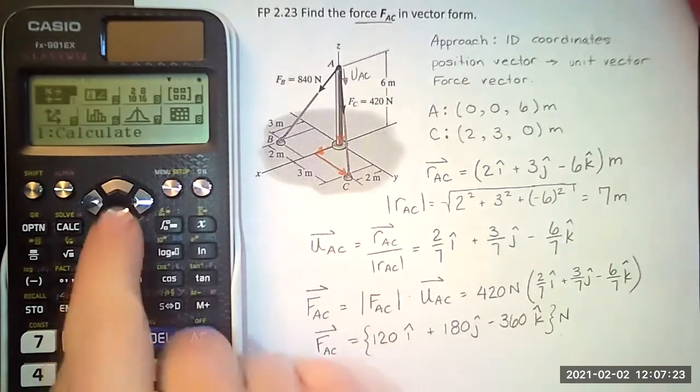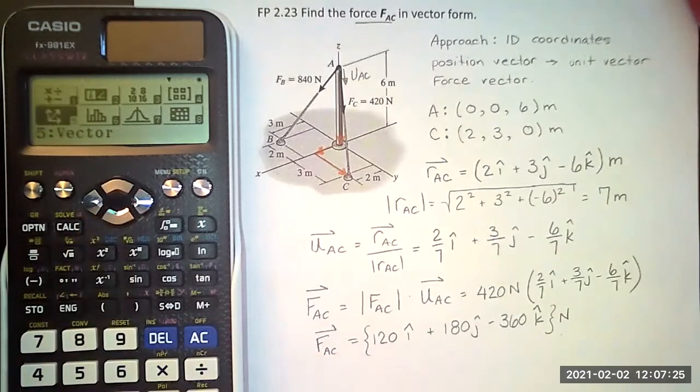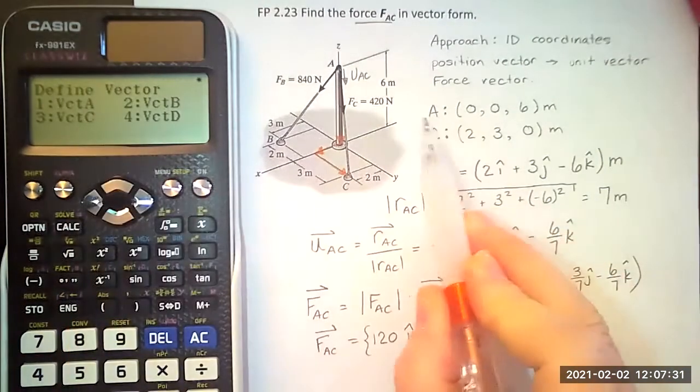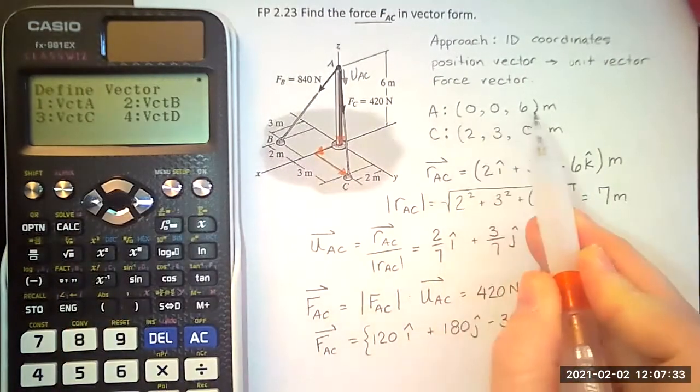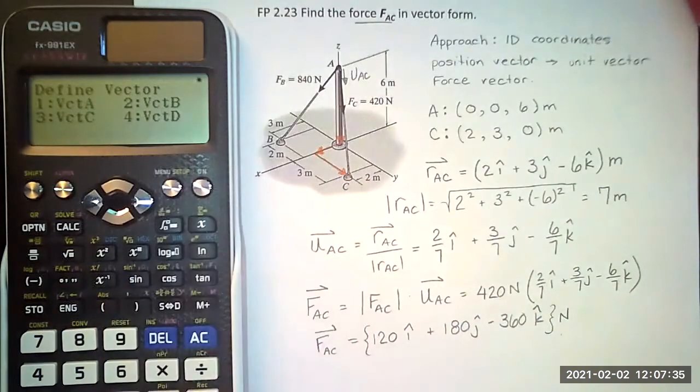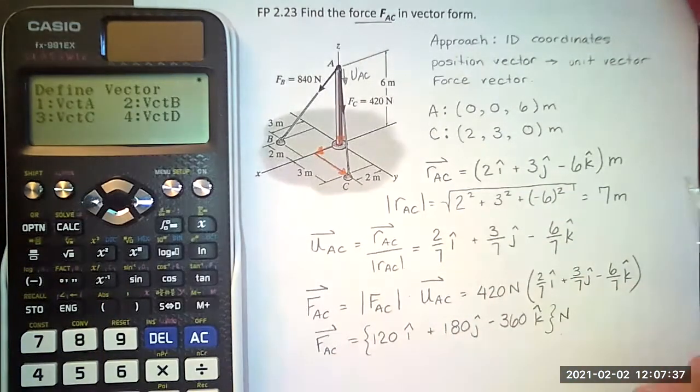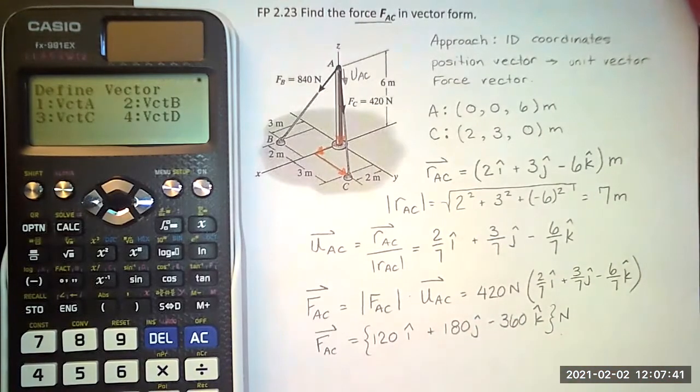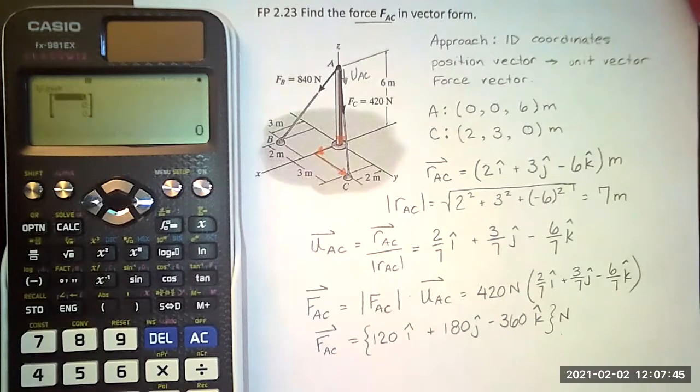So first thing we do is we go into the vector calculation mode and define vector A. So here I can define vector A to be the location of A. And I can define vector B to be the location of C. And I can calculate out my position vector from those. So I'll define vector A to have three segments. And I'll 0, 0, 6.